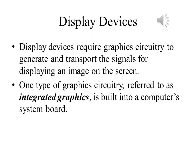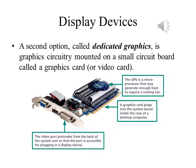Display devices need something within the computer to tell them which pixels get turned on and which ones get turned off. That means you need the circuitry that figures that out, as well as providing that information to the monitor. One type of circuitry for this is built into the computer system's board, known as integrated circuitry. The other method is to have a circuit board on which the graphics circuitry is mounted, known as dedicated graphics.